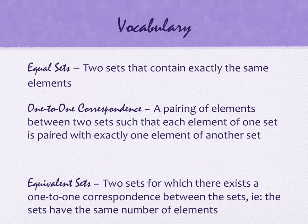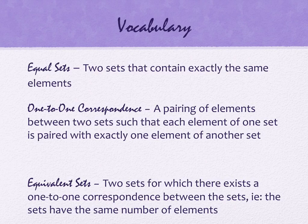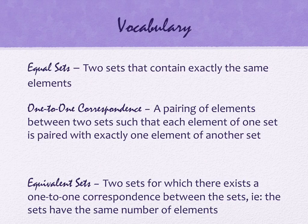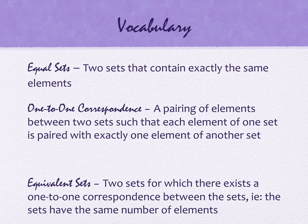Some vocabulary: equal versus equivalent. In English, when we say equal and equivalent, we mean the same thing — but in mathematics we don't. Equal sets are two sets that contain exactly the same elements. Equivalent sets — which is on the next sheet — are two sets for which there is a one-to-one correspondence. The key is that the sets have the same number of things. Equal means they have exactly the same elements. Equivalent means they have the same number of elements.